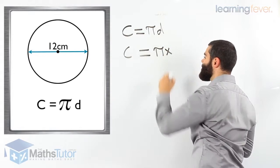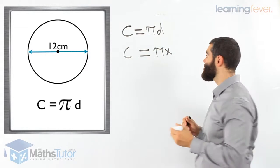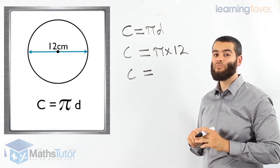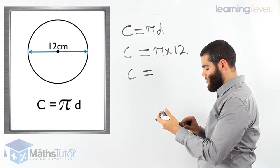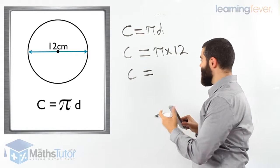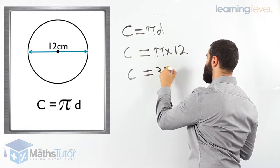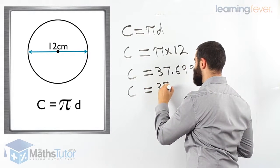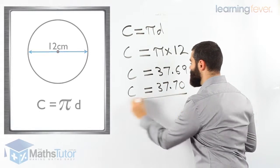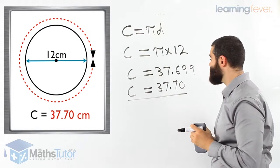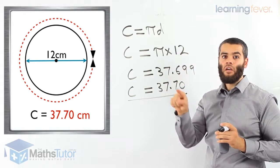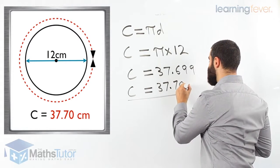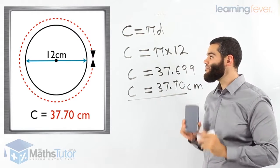Pi we're going to put in our calculator, times our d. Our d is our diameter — in this case it is 12 centimetres. So circumference equals pi times 12. Grab your calculator and let's do it. The answer is 37.699, and to two decimal places that is 37.70. So the circumference of this circle is 37.70 centimetres — the boundary of the circle with a diameter of 12 centimetres is 37.70 centimetres.